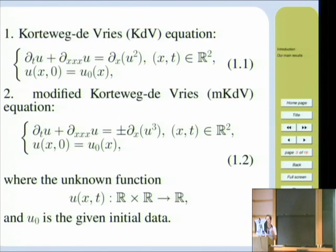The modified KdV equation is given by equation 1.2. The only difference is the nonlinear term is a cubic term, and KdV is a quadratic term. Also, for the modified KdV, there is a sign plus or minus that represents the focusing and the defocusing case, which means that the energy has two different cases. But for the KdV, they are the same.